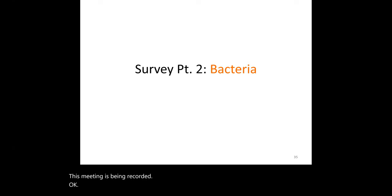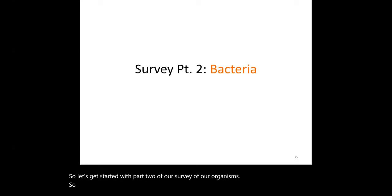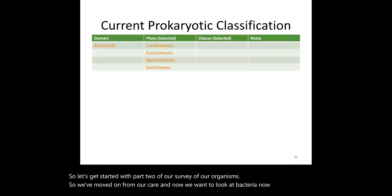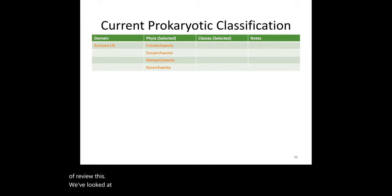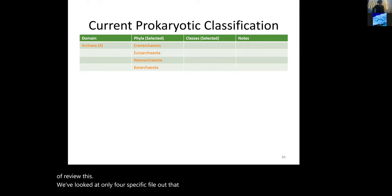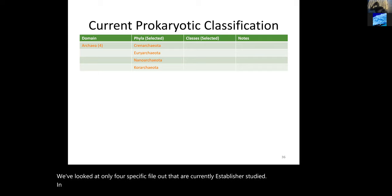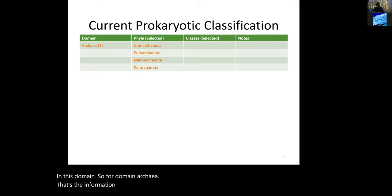Let's get started with part two of our survey of organisms. We've moved on from archaea and now want to look at bacteria. To quickly review, we looked at only four specific phyla in domain archaea: crenarchaea, euryarchaea, nanoarchaea, and korarchaea. That's the information you need to know for this portion of the exam.